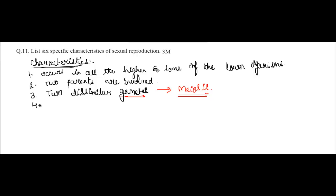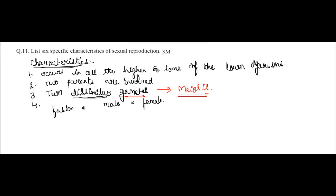Once the gametes are formed — one female and one male — we call them dissimilar because the male gamete is motile and smaller than the female gamete, while the female gamete is larger and non-motile. Once these two gametes are formed, they fuse with each other, and this fusion of gametes leads to zygote formation.